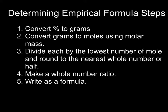When determining empirical formulas, follow these five steps. First, convert the percent to grams. Then convert the grams to moles using molar mass. Once you have your answers, divide each by the lowest number of moles, and then round to the nearest whole number or nearest half to make a whole number ratio, and write it as a formula.